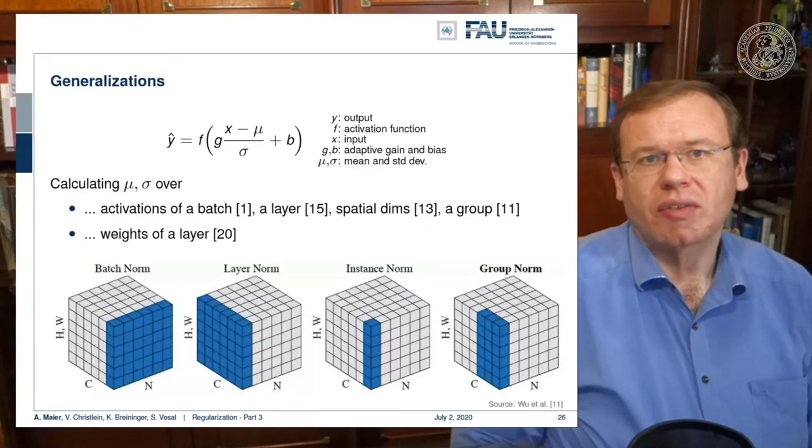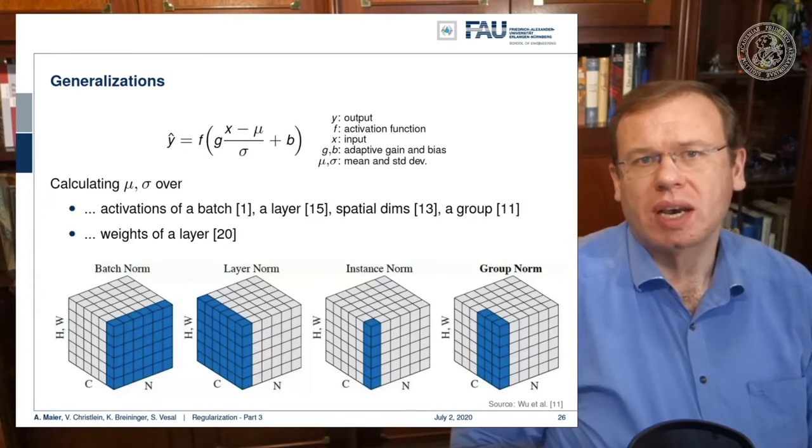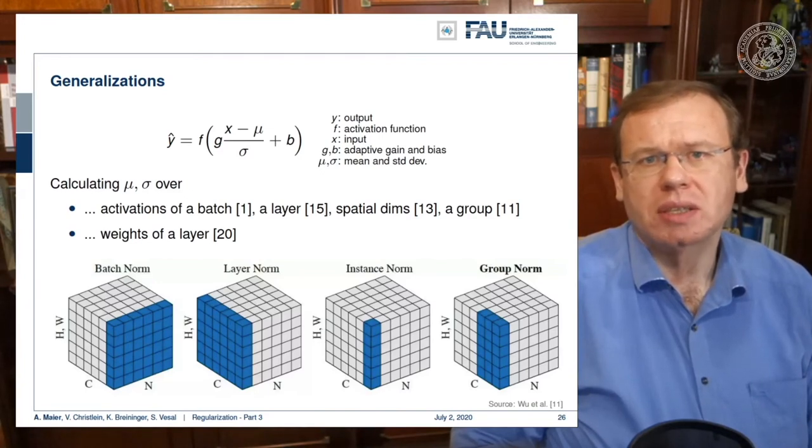There are generalizations of batch normalization. You can calculate the mu and sigma over activations of a batch, over a layer, over spatial dimensions, over a group, over the weight of a layer, and we might have missed some variations. So this is a very powerful tool. And there is very little theory behind the best solutions that we have at the moment.